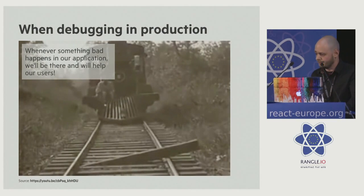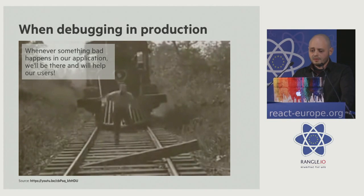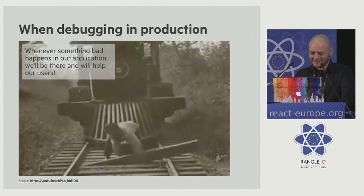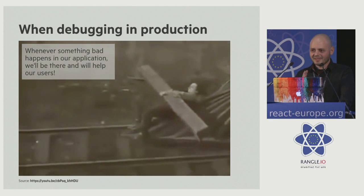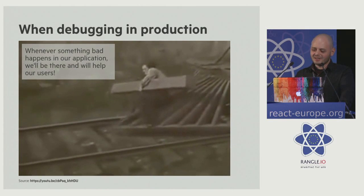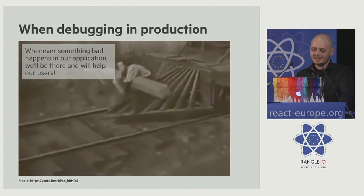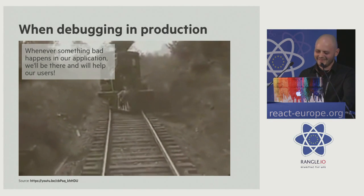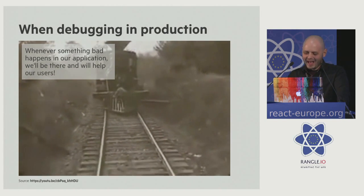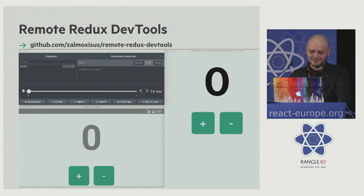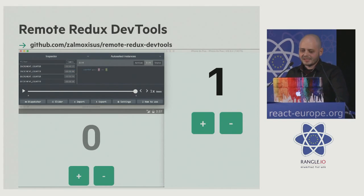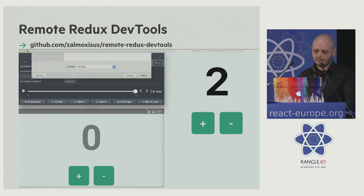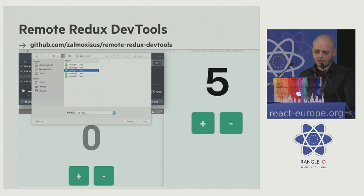So what we want is to be right there whenever something bad happens in our application — to help our users right there in production, with full control from the user's side and at the same time to have all our features and tools from development. And I've implemented that in Remote Redux DevTools. Unlike the extension, it can be used not only for web applications but also for React Native, hybrid, desktop, and server-side applications. It has all the features of the extension we've seen before, and even more.